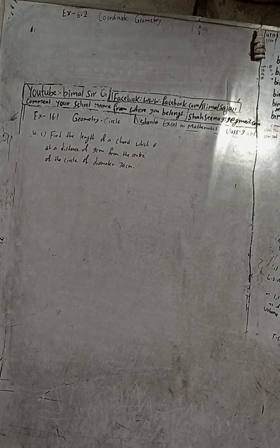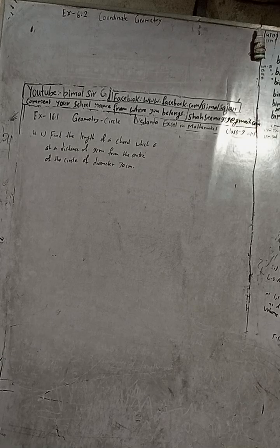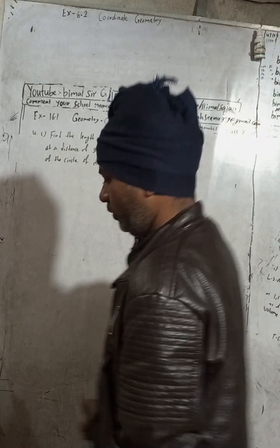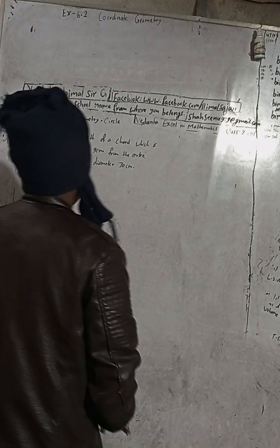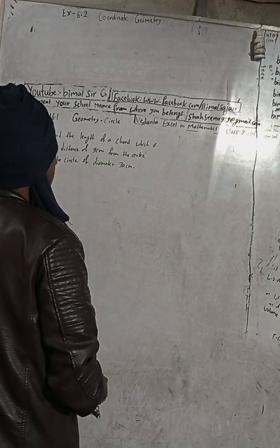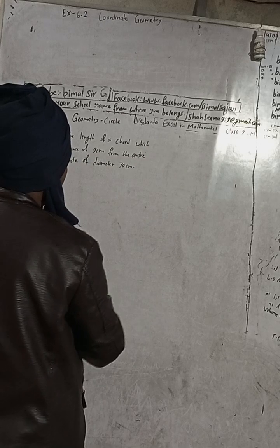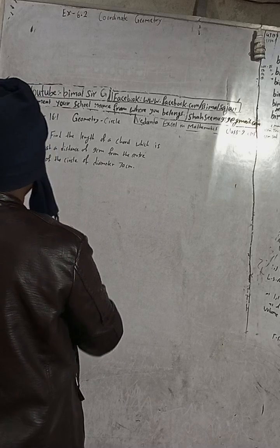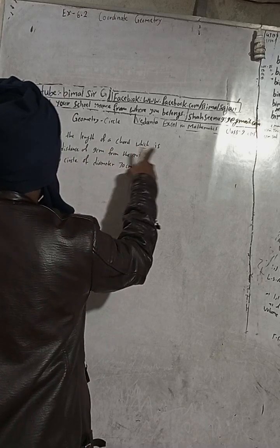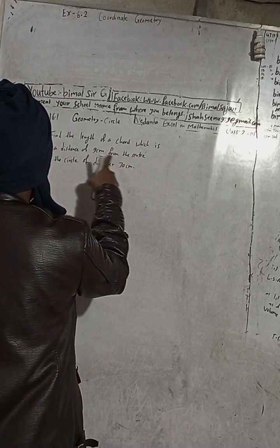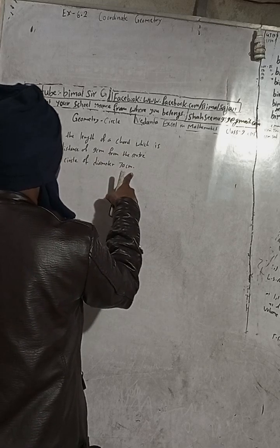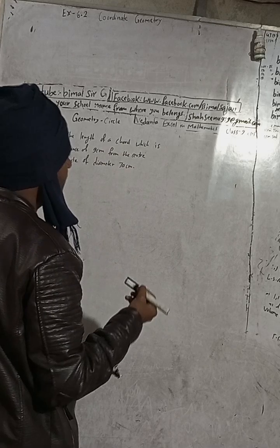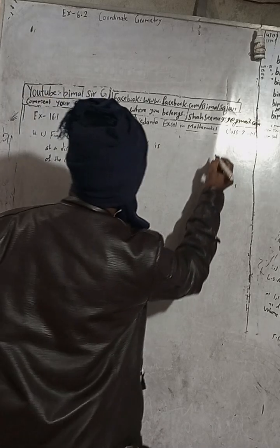Okay, this is question number 4C. The writing is small but you can watch the video in high quality. You have to use earphones for the audio, which will help a lot. Find the length of a chord which is at a distance of 9 cm from the center of the circle of diameter 30 cm. No figure is drawn in the question, so we can draw the figure ourselves.